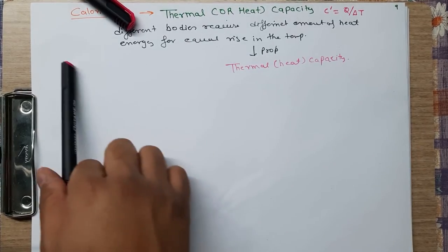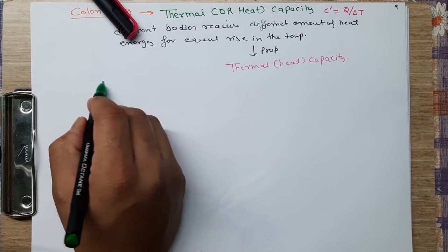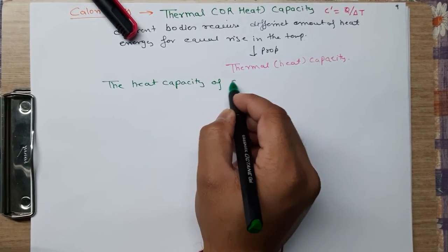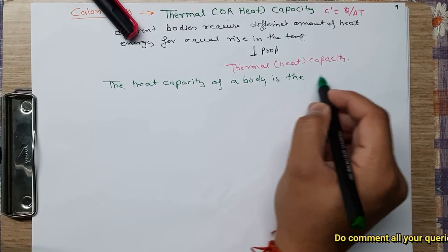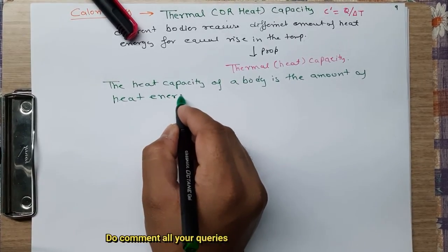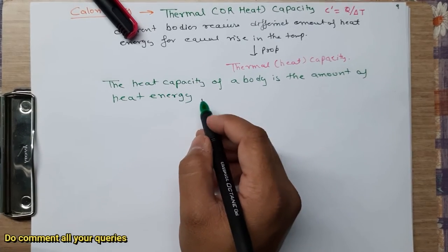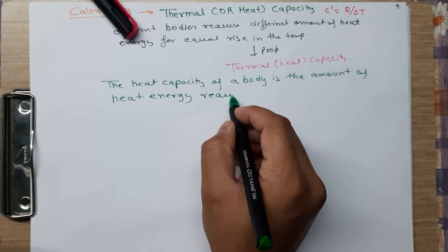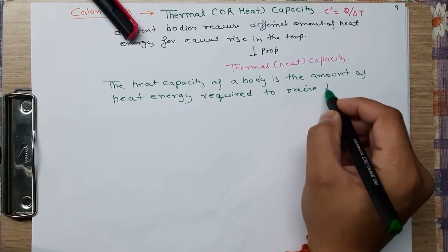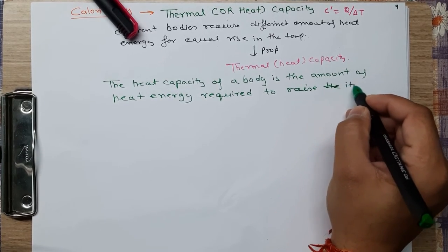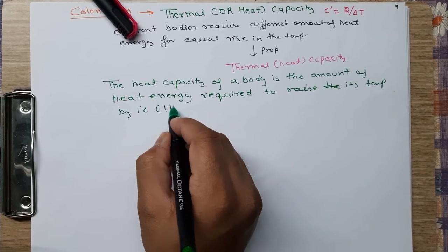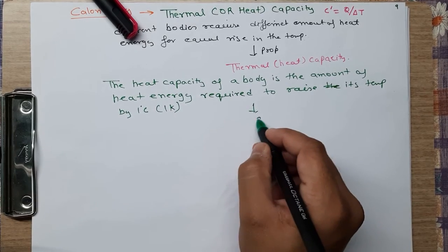The heat capacity of a body is defined as the amount of heat energy required to raise its temperature by 1 degree Celsius or 1 Kelvin. This is denoted by C prime.